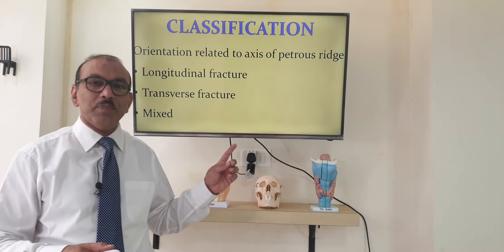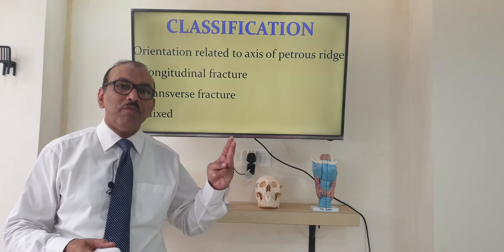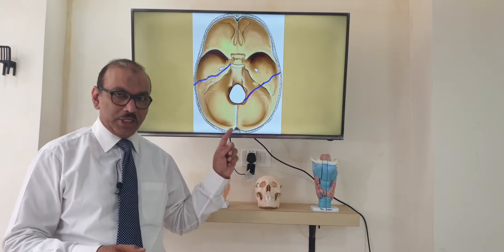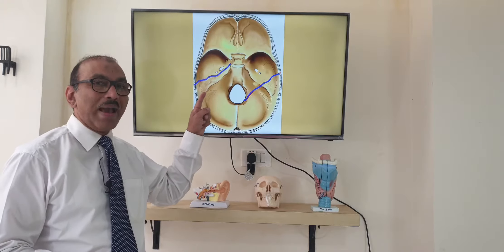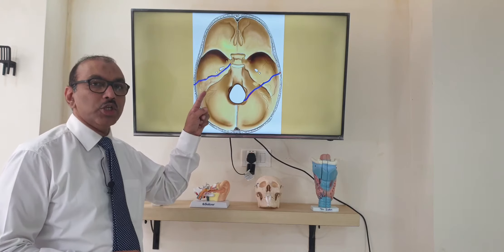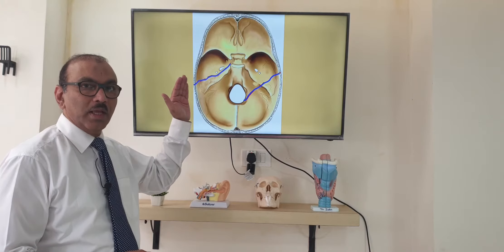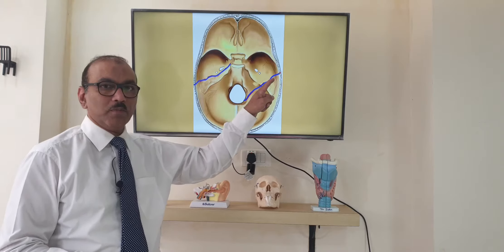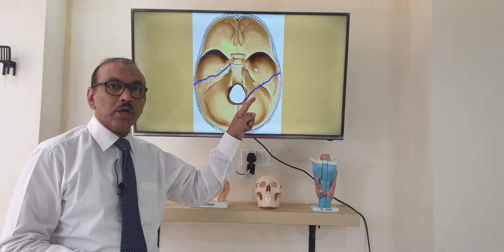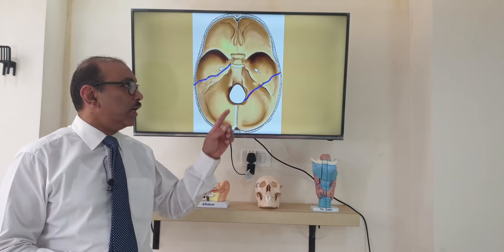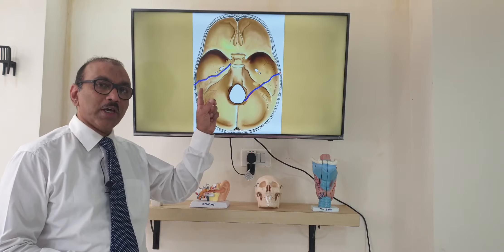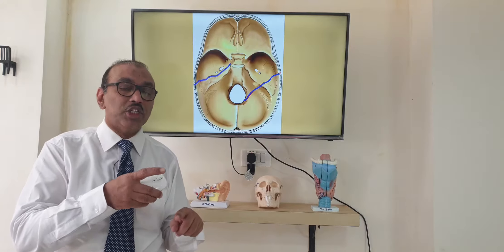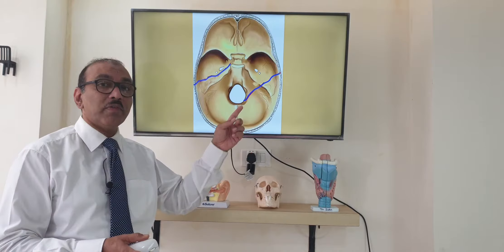For the temporal bone fracture classification, there are three types: longitudinal, transverse, and mixed. Longitudinal means the fracture runs parallel with the petrous part of the temporal bone, and the blow is from the lateral side. In a road traffic accident where the blow is from the occipital side — from behind — it will be a transverse fracture, which goes perpendicular and involves the inner ear most. Longitudinal fracture is more common at 80%, but in children, transverse fractures are more common.